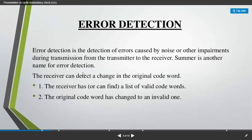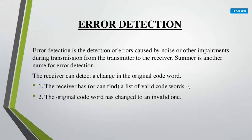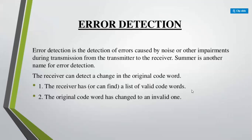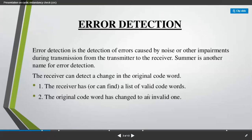Whenever you detect the errors, you might not know what the original code was. So the first thing is you have to validate whether you have the original code or not. The receiver will always have a list of valid code words. The receiver will have all these things, and the original code which has no change will also be there along with the invalid one. Through that only, it is going to check if any error is present or not.